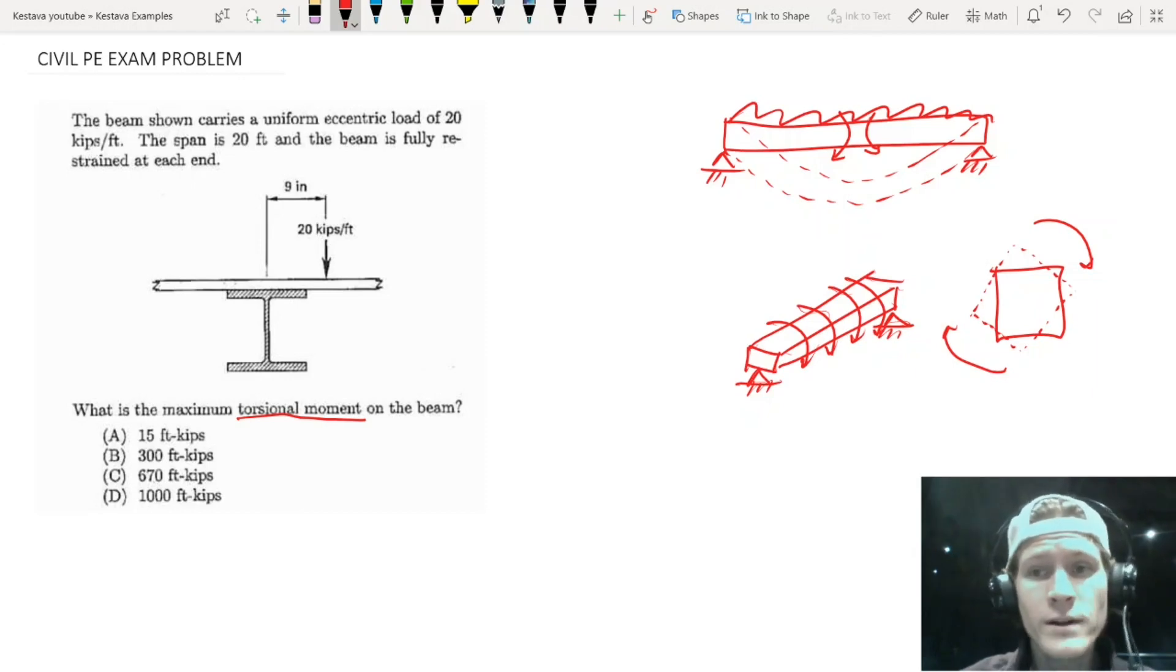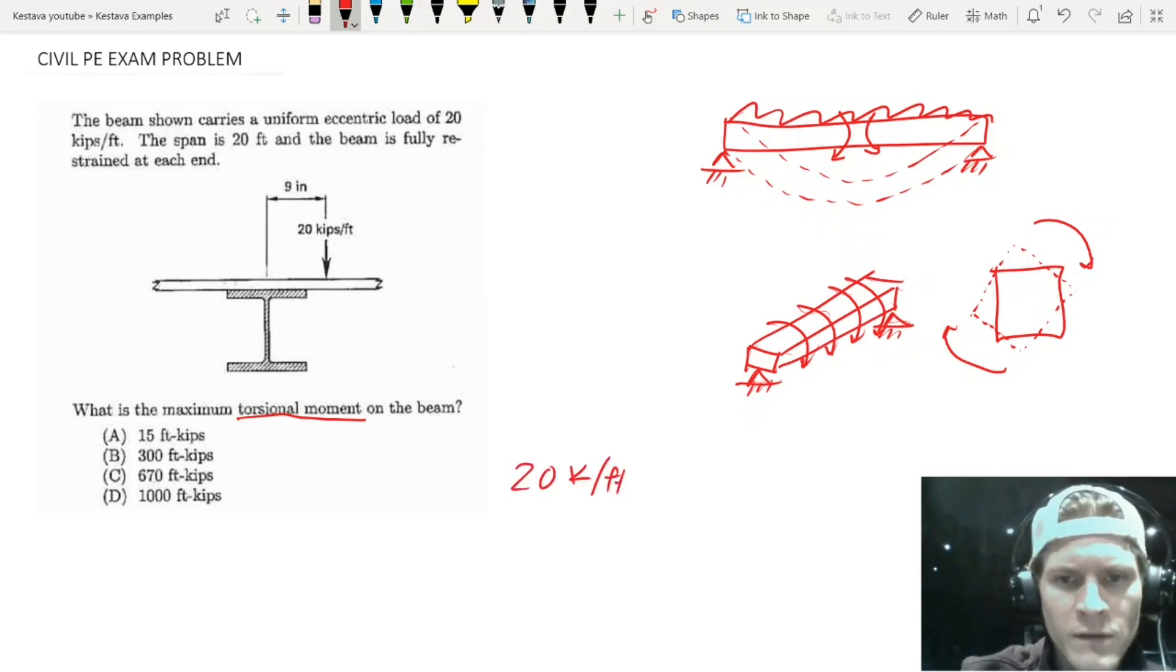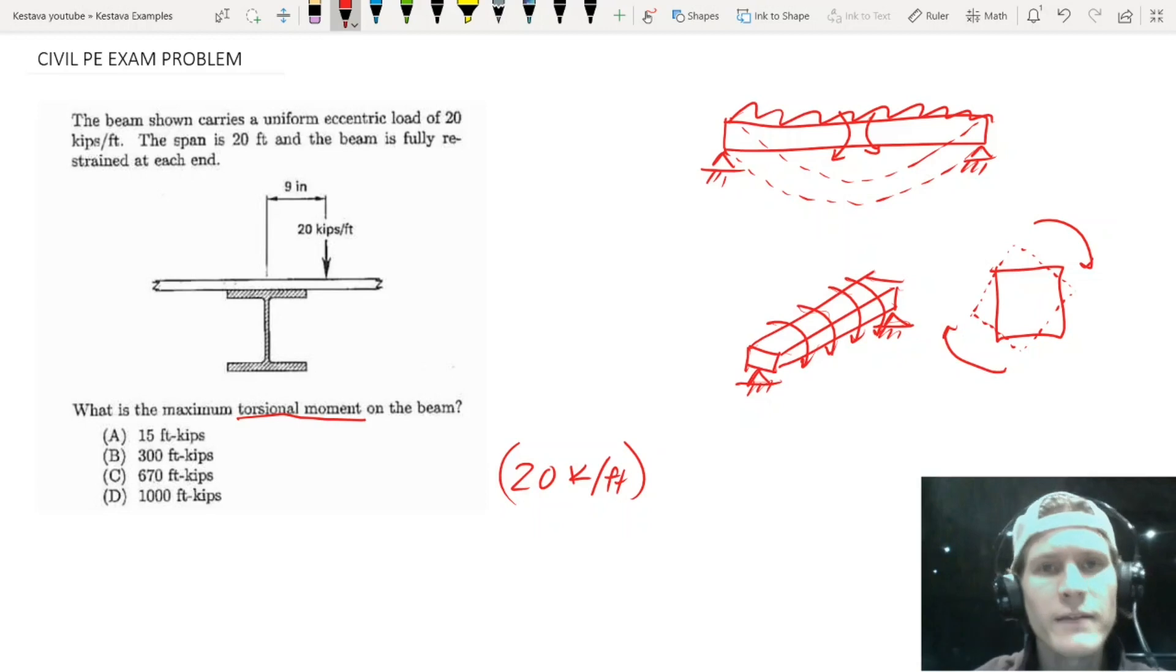Moving forward, we need, so like I said, it's very similar to a moment. So we need a force times a length. And so let's first find our force. So force, we have 20 kips per foot. And you might think, okay, well, there's my force. Well, that's a force per length, per unit length. So we still need to multiply that because that 20 kips is being applied all the way along our beam, which means that in order to get a sum of forces, we need to multiply by the length of the beam, right?